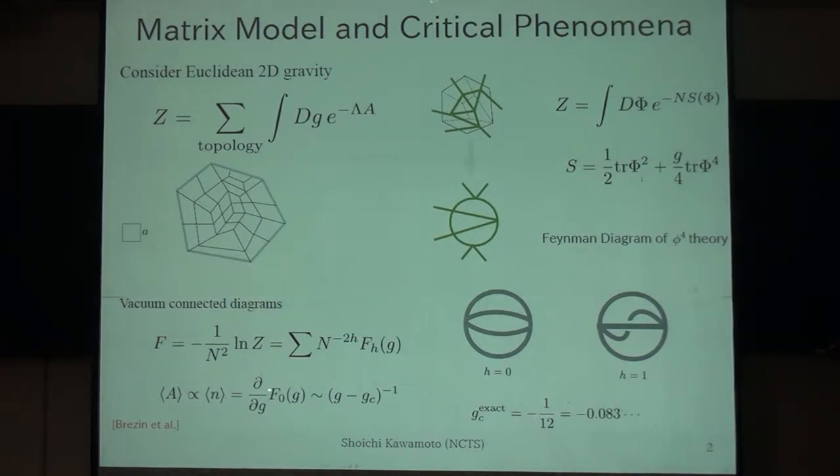And it's known that for the large N limit, the partition function develops some singularity at some special point of the coupling constants. At this point, the expectation number of plaquettes, in this case, diverges.